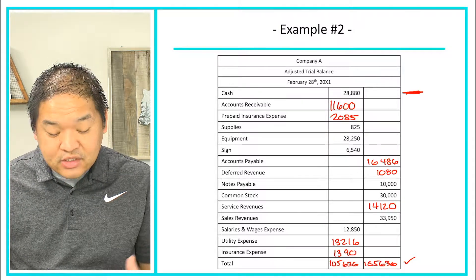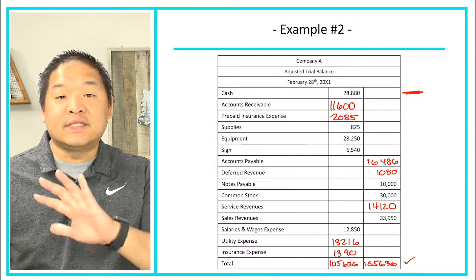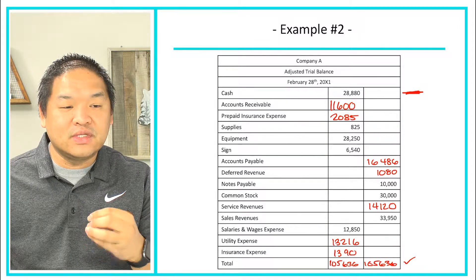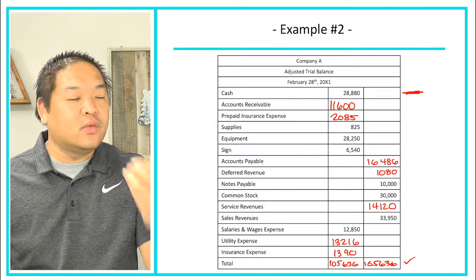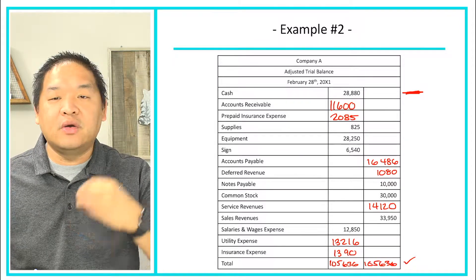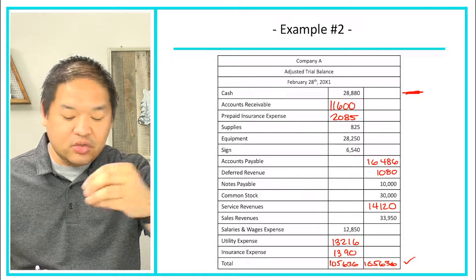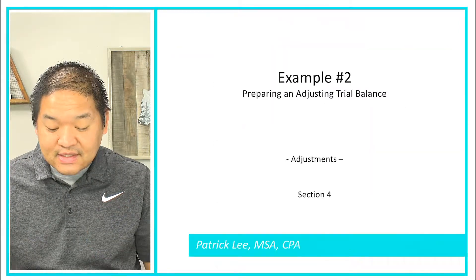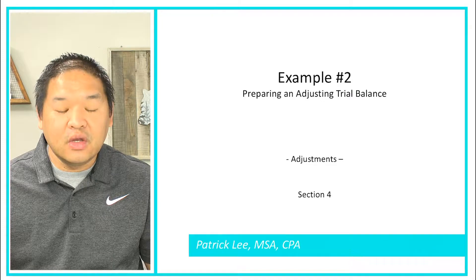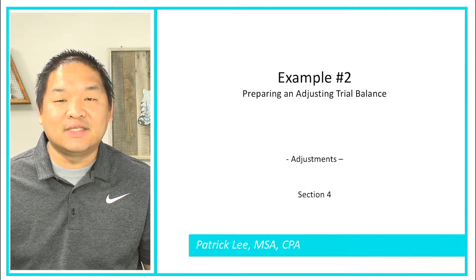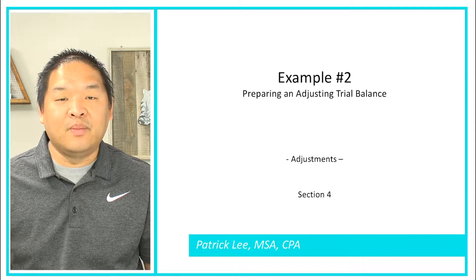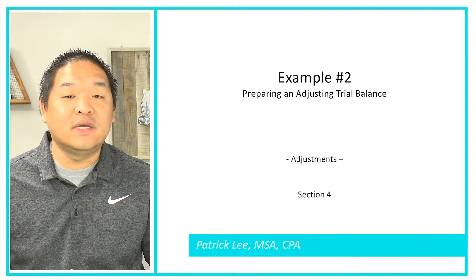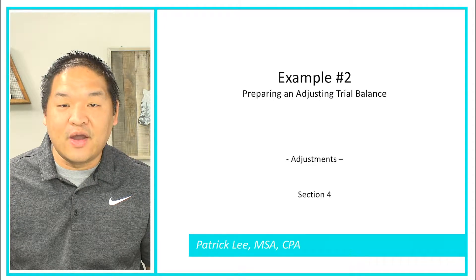So that's how we do the adjusted trial balance — it's not difficult at all. The biggest difficulty is really the adjusting entries themselves. Once you have those, you post them to the T-accounts, move the T-accounts to the adjusted trial balance, and you're good. That is example two on preparing an adjusted trial balance.